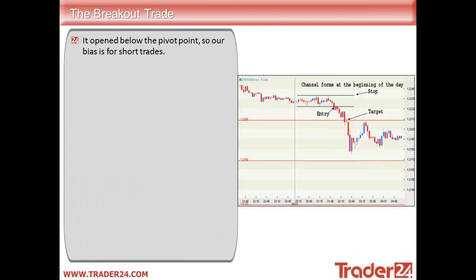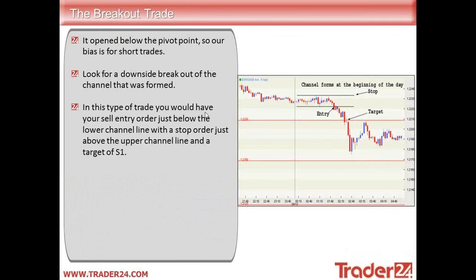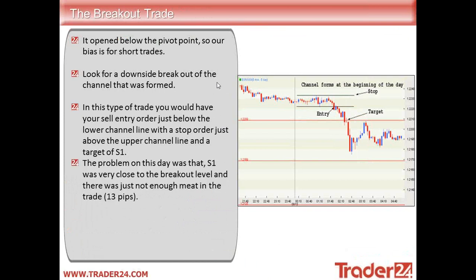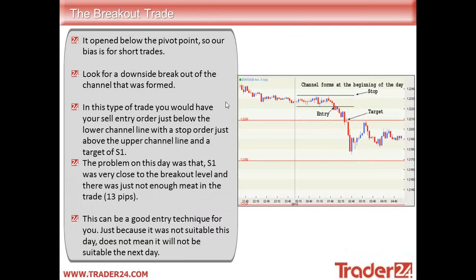The first technique is the breakout trade. The market opened below the pivot point so our bias is for short trades. We look for a downside breakout of the channel that was formed. We can see a nice channel formed — we'd have our stop loss a little bit above the upper channel and look to enter as it breaks through below the channel, with our target being the first support level S1. You would place your sell entry order just below the lower channel line, with a stop order just above the upper line and target of S1. The problem on this day was that S1 was very close to the breakout level — only 13 pips on this trade — so it wasn't really worth entering. This can be a good entry; just because it was not suitable this day does not mean it would not be suitable the next day.